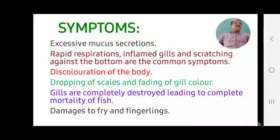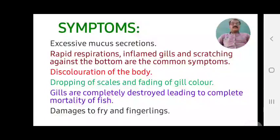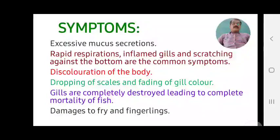Another symptom is discoloration of the body — the body coloration fades when this worm attacks the fish. Additionally, dropping of scales and fading of gill color occur. When gill color fades, respiration becomes infected and reduced, and ultimately the fish dies.